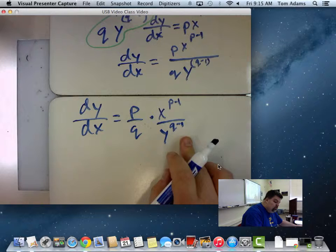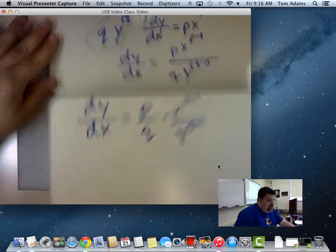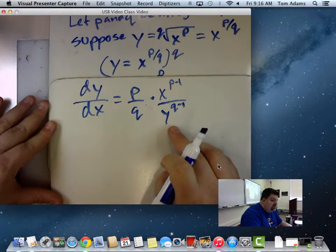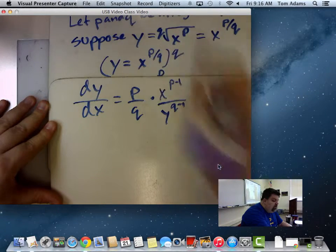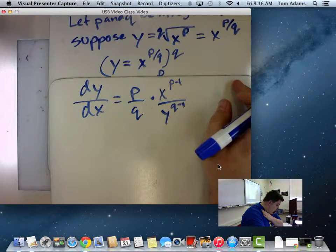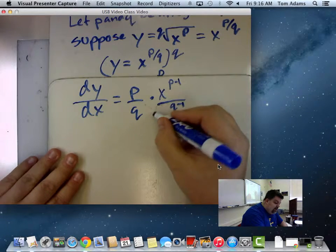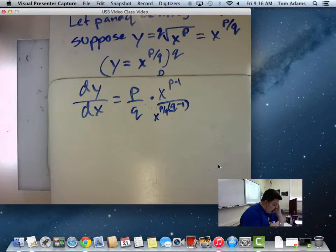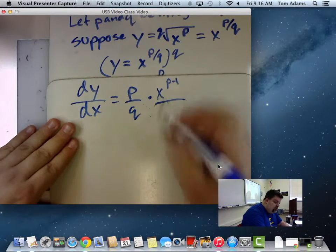Well, we said way back here that Y was equal to X raised to the PQ. So I'm going to replace this with X raised to the P divided by Q raised to that. Well, let me write it a little bigger. It's a little smaller there.